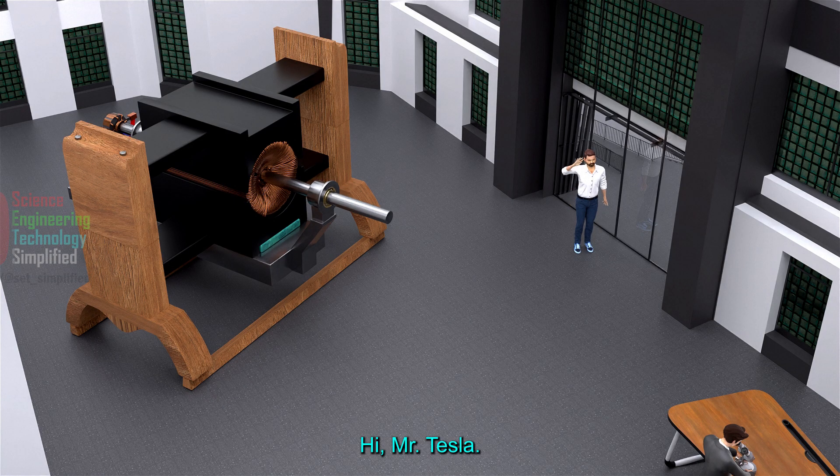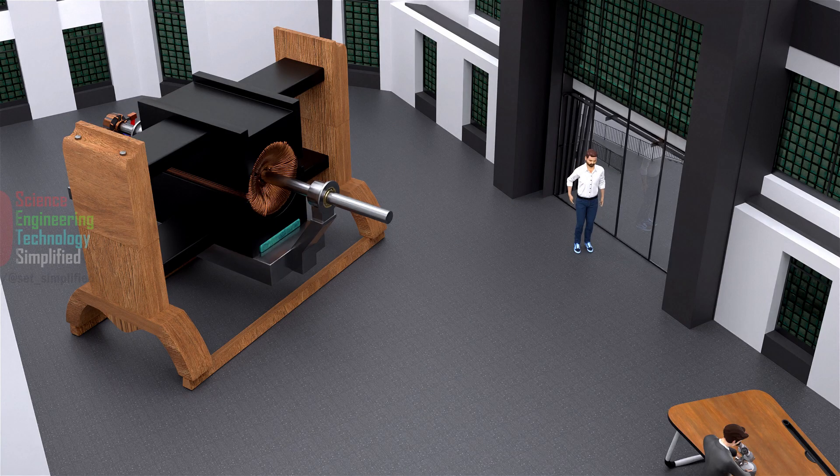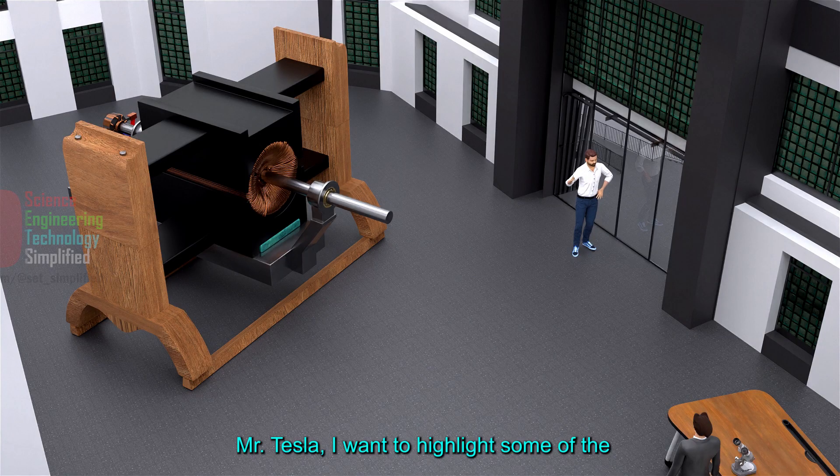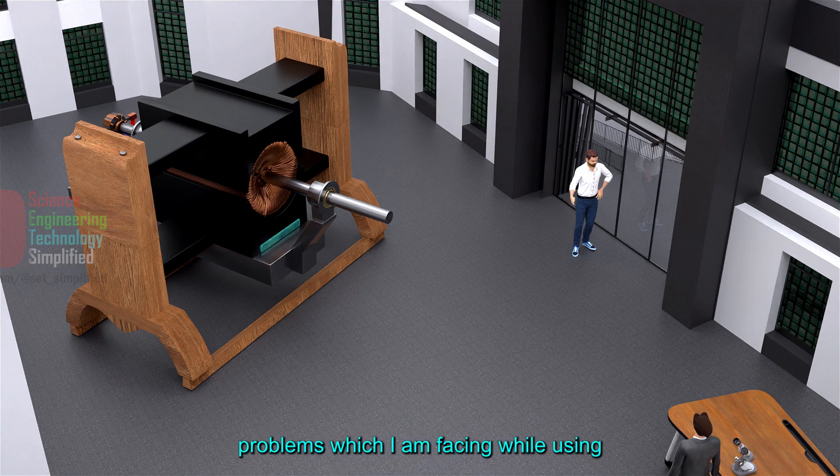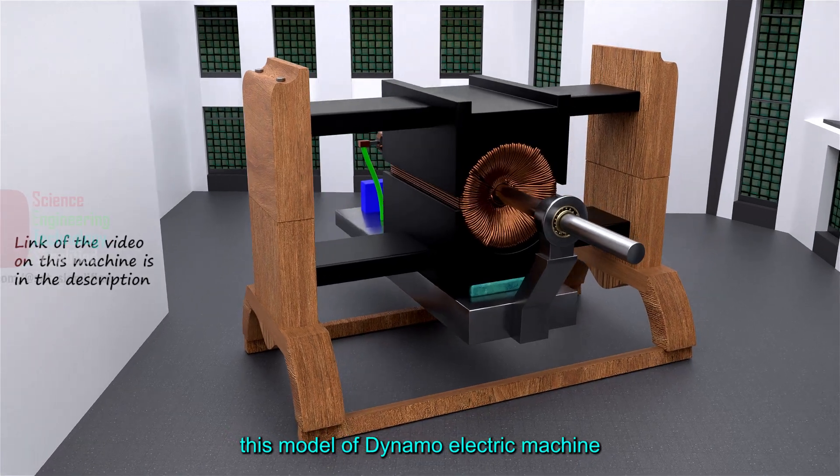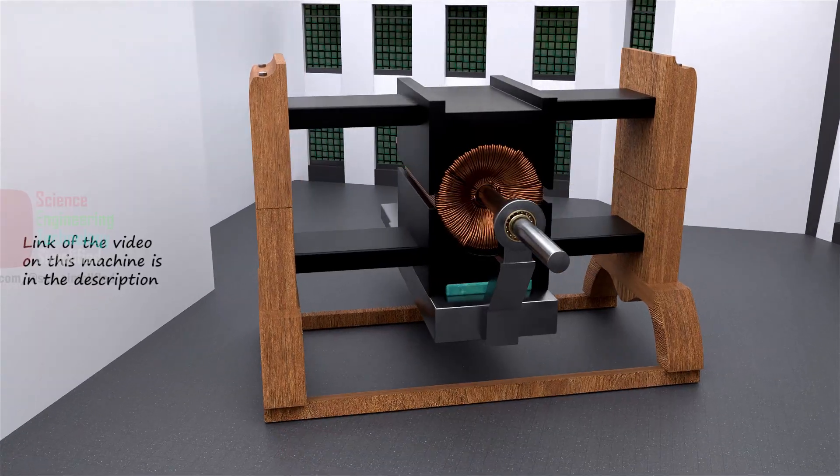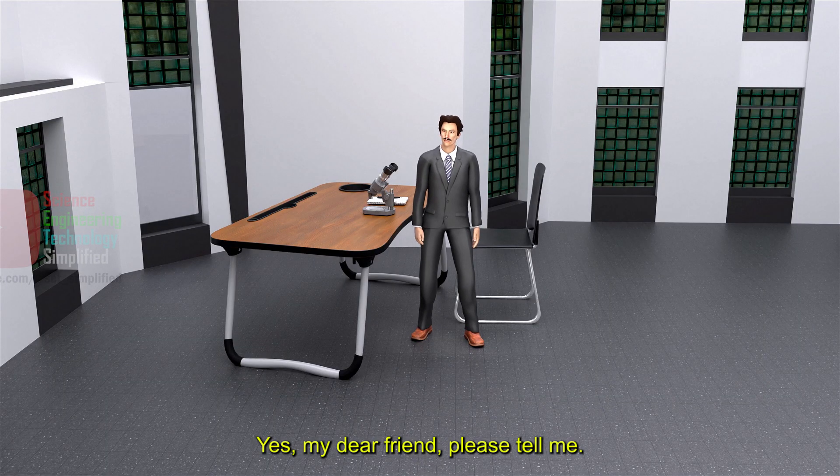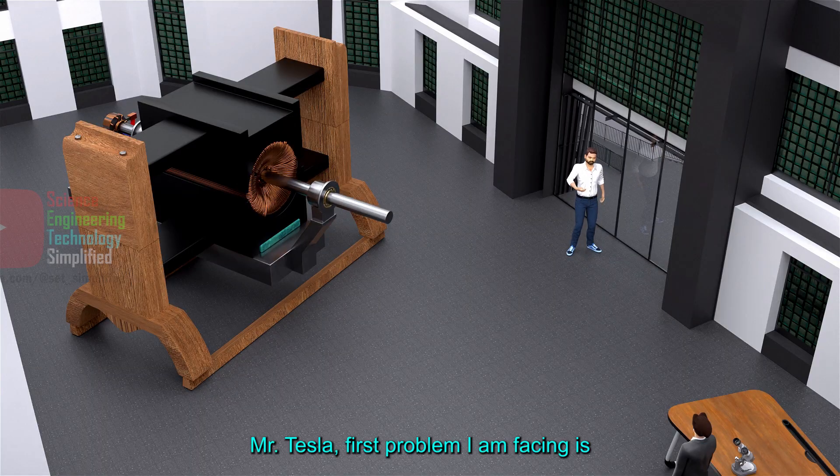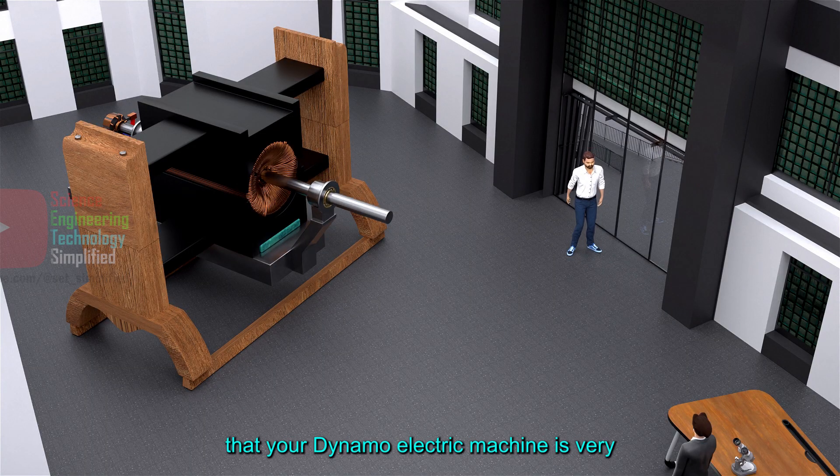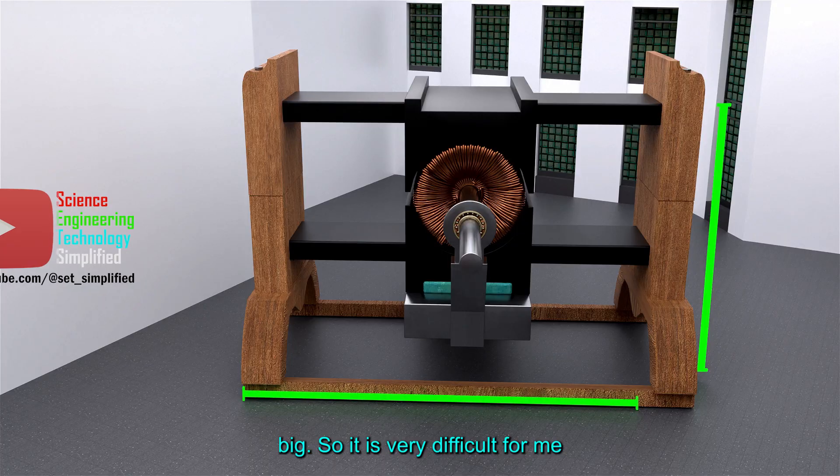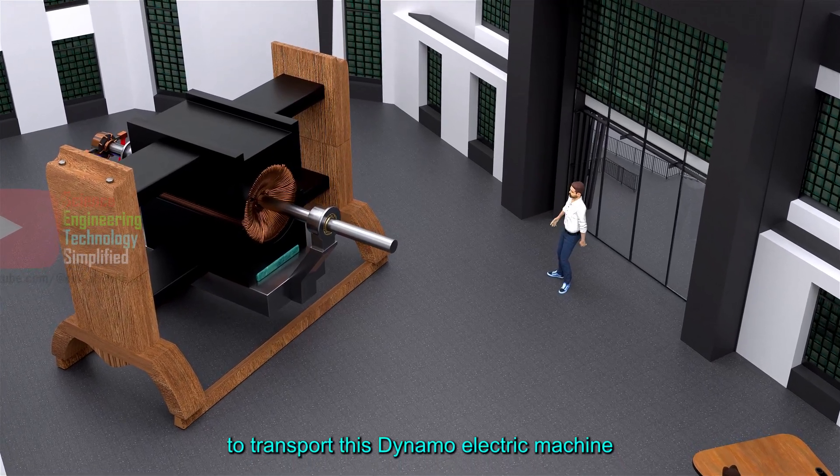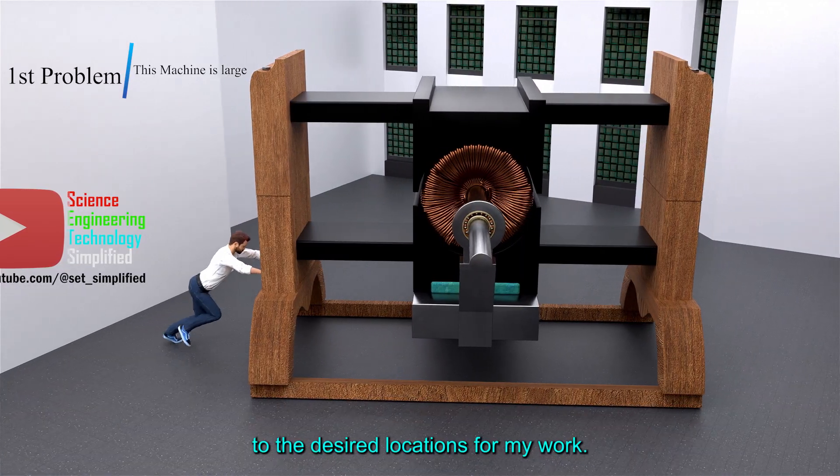Hi, Mr. Tesla. Hello, my friend. Mr. Tesla, I want to highlight some of the problems which I am facing while using this model of dynamo electric machine which you gave me last year. Yes, my dear friend, please tell me. Mr. Tesla, first problem I am facing is that your dynamo electric machine is very big. So it is very difficult for me to transport this dynamo electric machine to the desired locations for my work.